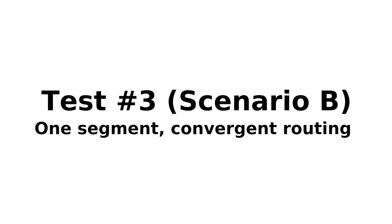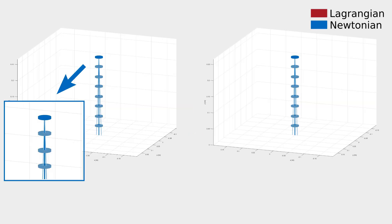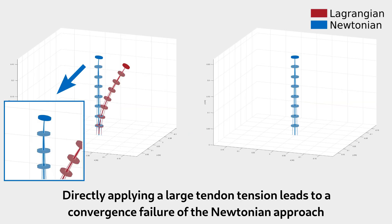Test 3, Scenario B: In this scenario, a single segment robot with two converging tendons is presented. Directly applying a large tendon tension leads to a convergence failure of the Newtonian approach.